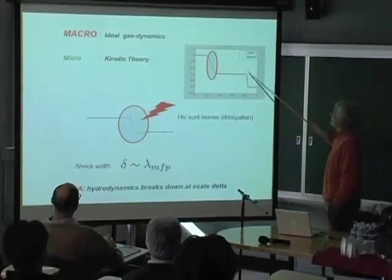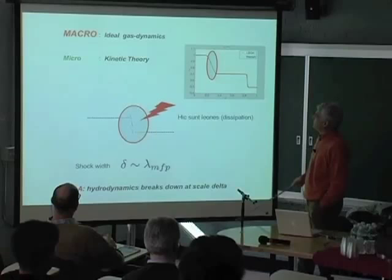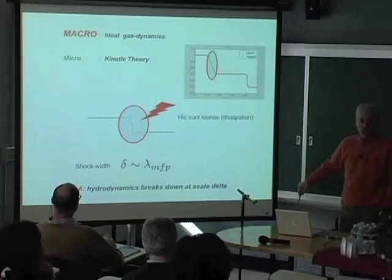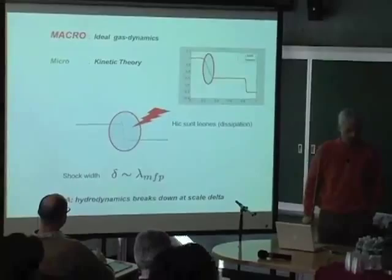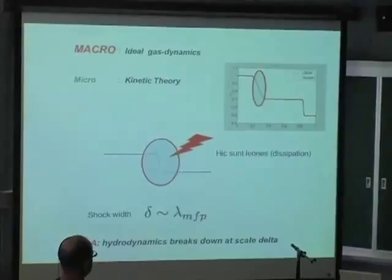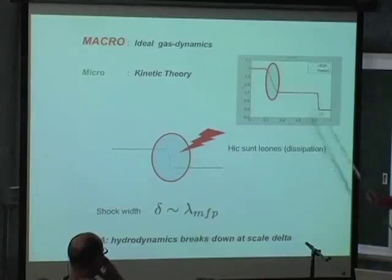The model would be ideal gas dynamics for the fluid and kinetic theory for the shock region. Why do we have to couple these two levels? Because away from the shock — take this steep shock here — away from the shock region, you have little dissipation, if anything at all. Which means that in this part of the fluid, you are safe if you apply dissipation-less hydrodynamics. However, you cannot apply dissipation hydrodynamics in the region where there are strong gradients.